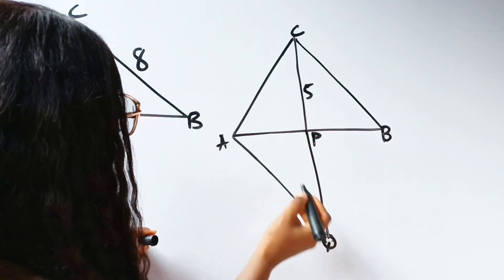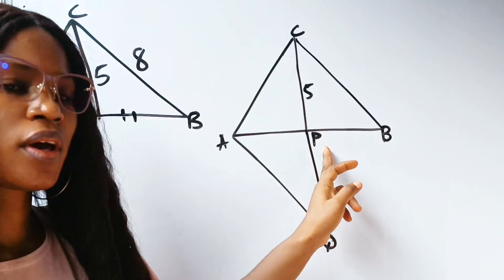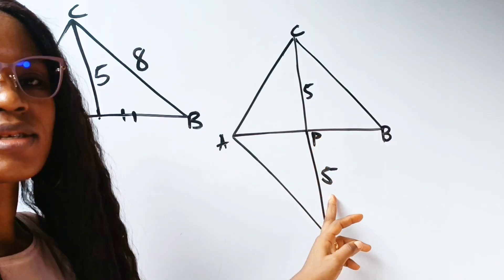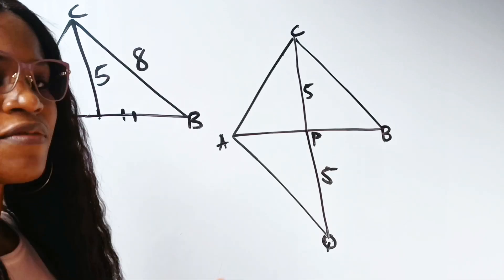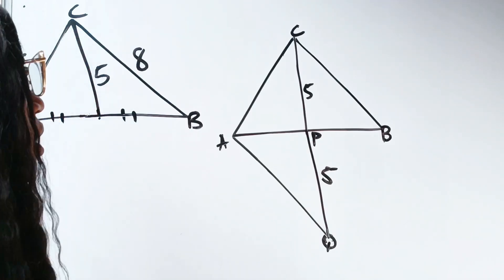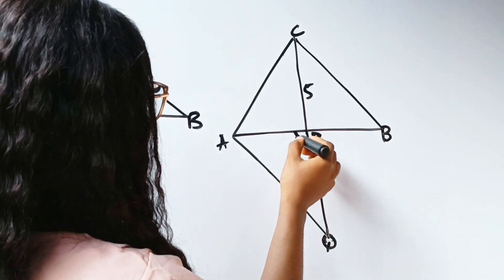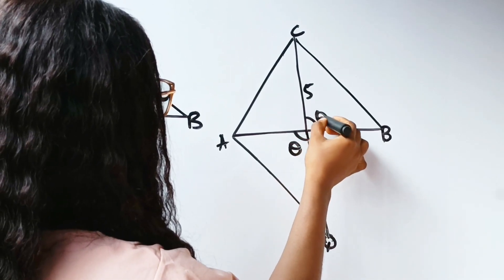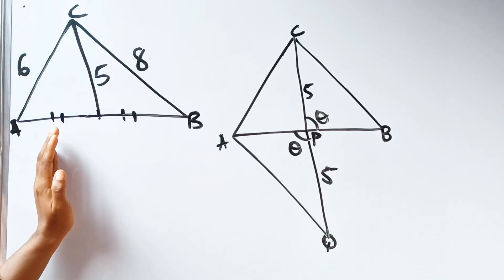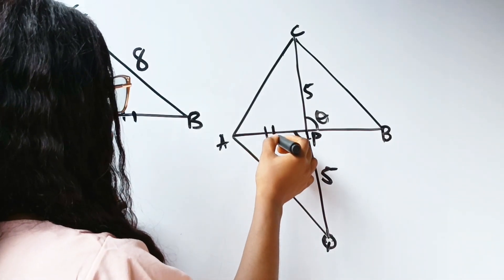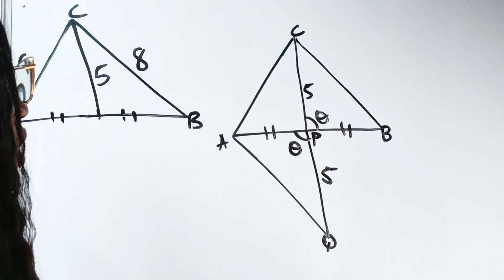We call this new point Q, and here is P. Now let's join these two points. So PQ is five — that is what I meant: I want to replicate line CP, so PQ is five as well. Now, note that vertically opposite angles are equal.